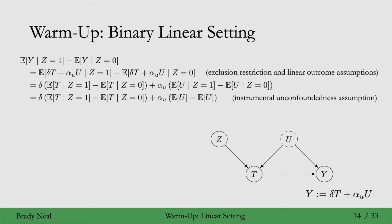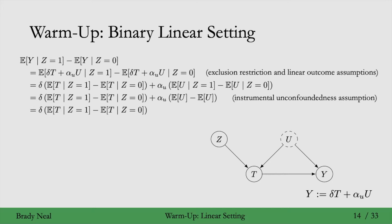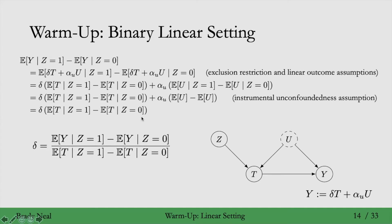You can see this independence in the causal graph in the bottom right here. The path u to t to z is blocked by the collider t. And similarly, the other path from u to z — u to y to t to z — is blocked by the collider y. So because of that independence between u and z, we can just remove the z that was behind the conditioning bar in the conditional expectation for u. Then expected value of u minus expected value of u is 0, so we can remove that term. And finally, we can solve for delta by dividing both sides by this factor.